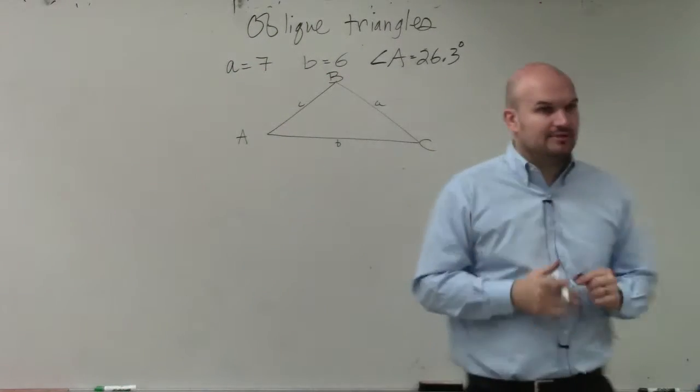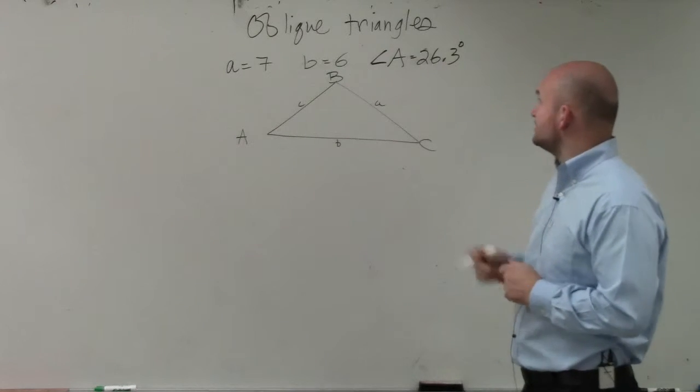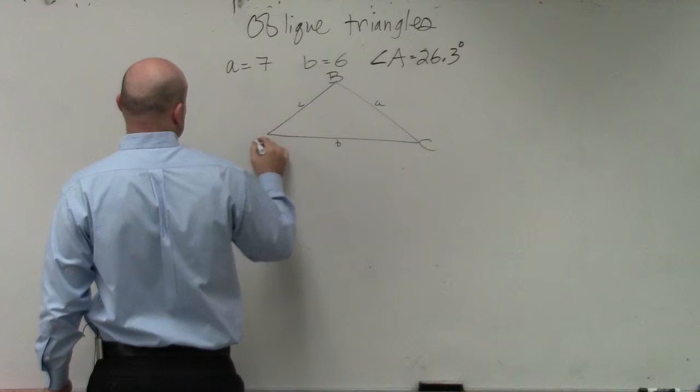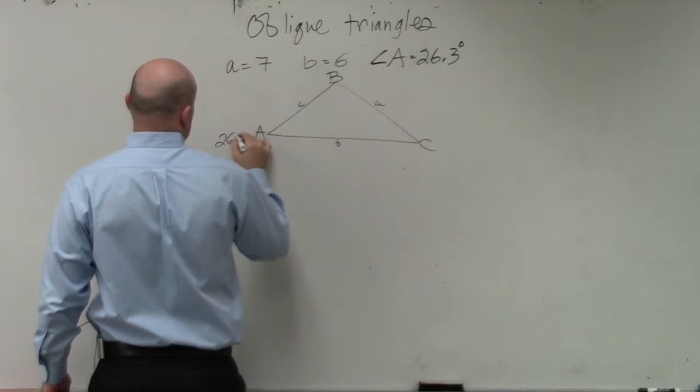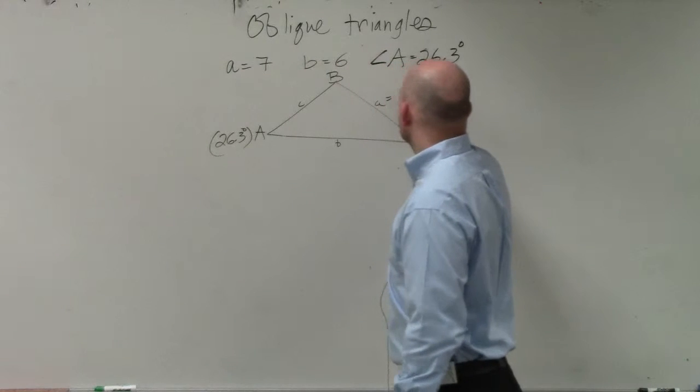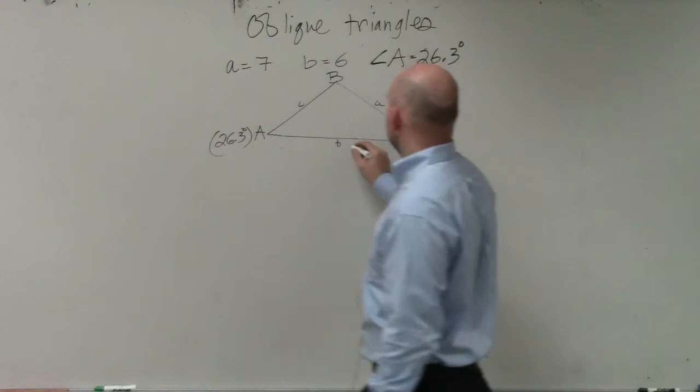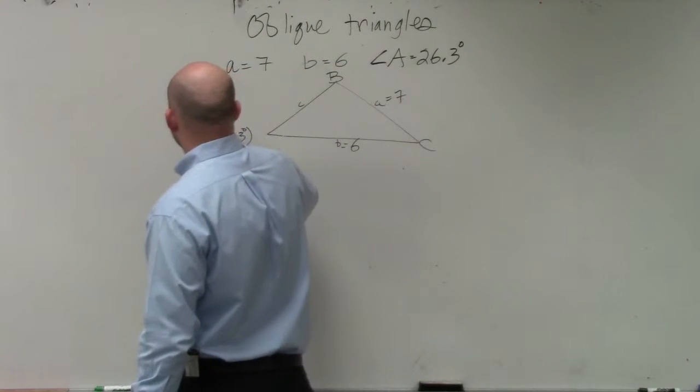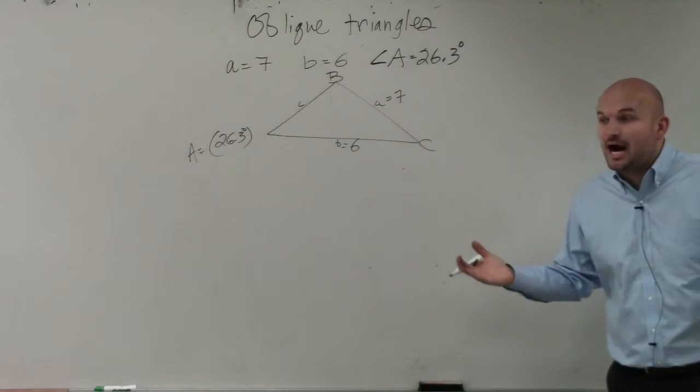I would just arbitrarily choose A, B, and C, and then say, OK, angle A is 26.3 degrees, side a is 7, b is equal to 6.